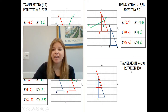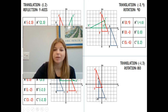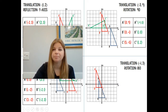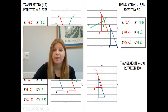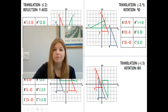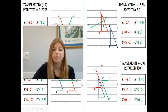Last one: a translation of negative 1, 3 means 1 unit to the left and 3 units up for every point, giving A prime, B prime, C prime. A rotation of 180 degrees is the same as a reflection through the origin — both signs become negative. So if A prime is at negative 2, 4, the new point is at positive 2, negative 4. If B prime is at negative 2, negative 1, the new point is at positive 2, positive 1. If C prime is at 0, negative 1, the new point is at 0, positive 1. The translation shifts the original points, and the rotation simply negates all values.